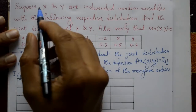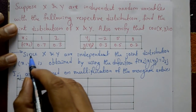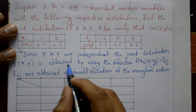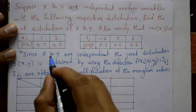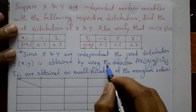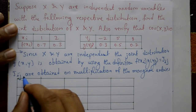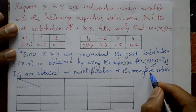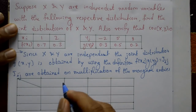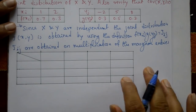Since X and Y are independent random variables, the joint distribution j(x,y) is obtained using the definition of independence. For independent variables, the joint probability j(i,j) equals f(xi) times g(yj). The joint entries are obtained by multiplication of the marginal entries: f1, f2 for X and g(y1), g(y2), g(y3) for Y.